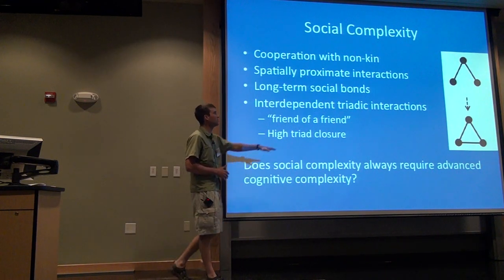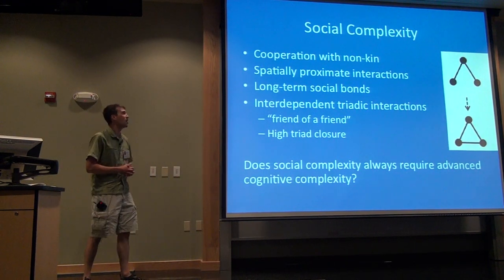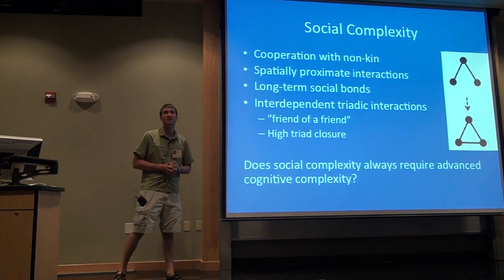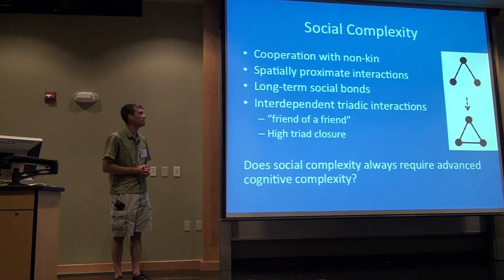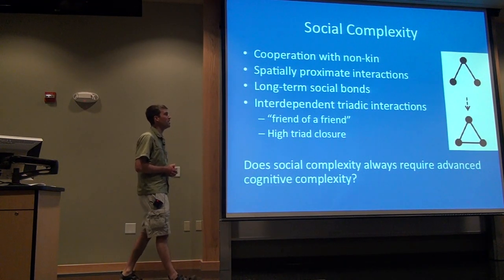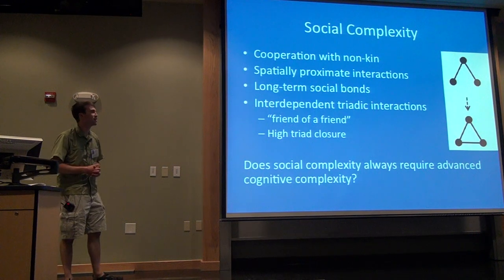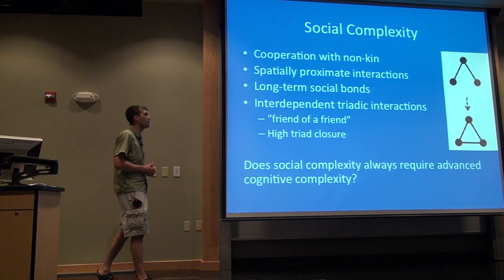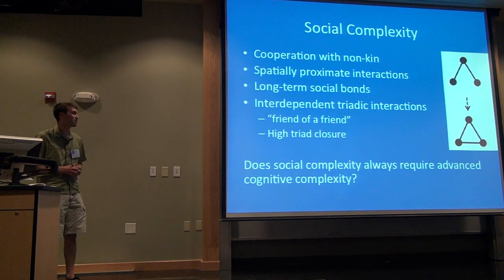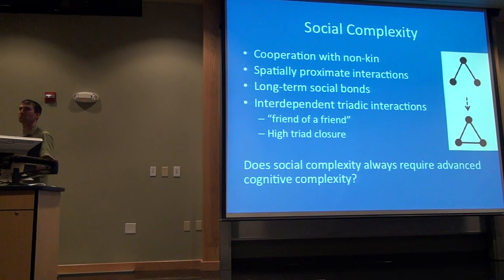What I mean by triadic interactions is represented by a little pictogram where circles represent different individuals in a society. The triad is one of the basic structures we look at in societies. In most societies, individuals that share connections with another individual end up also forming connections with each other — what we call triad closure, where all three individuals interact with each other. This is also termed a friend-of-a-friend type of effect. These ideas raise the question right away: do we need social complexity and cognitive complexity to go hand in hand? Is this required?